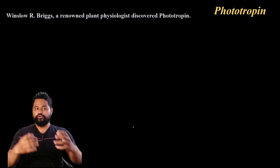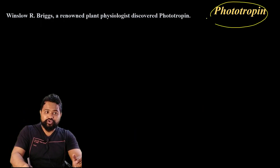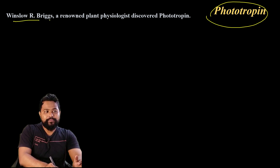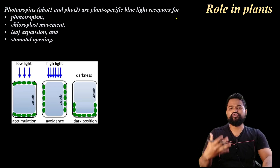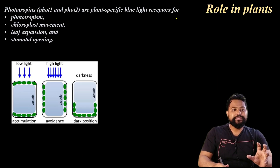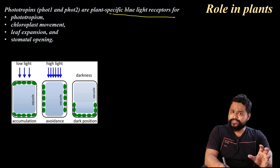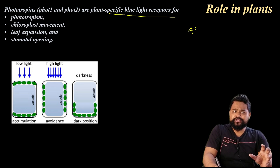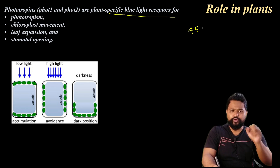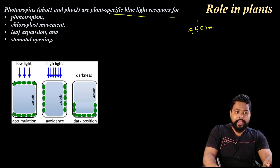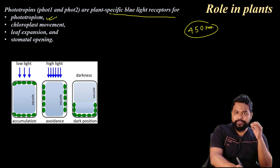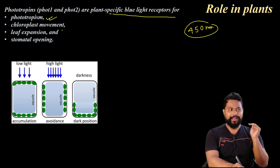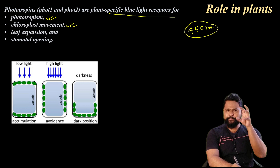Finally, phototropin. Phototropin was discovered by Winslow Arbor, a renowned plant scientist. Phototropins are plant-specific blue light receptors that absorb light in the 450 nanometer range. They help in phototropism and chloroplast movement, which are important roles.